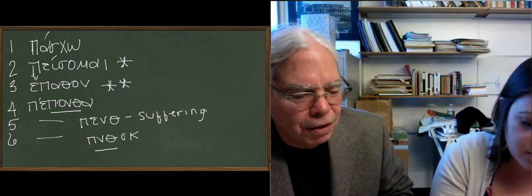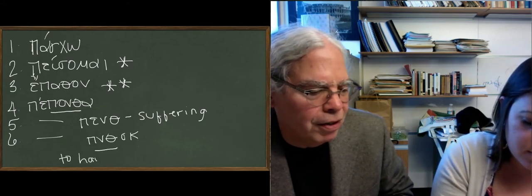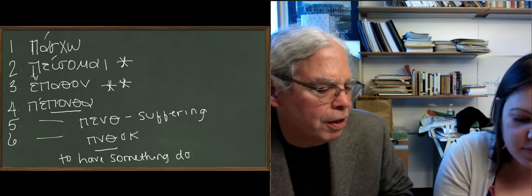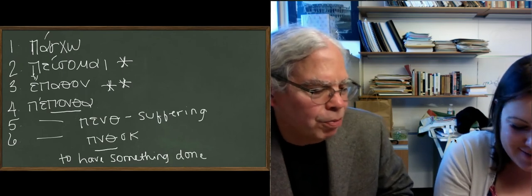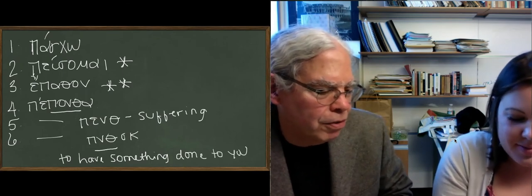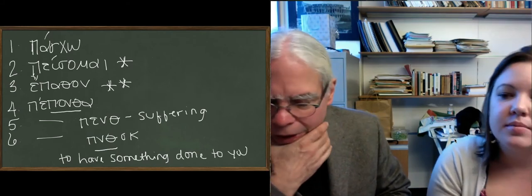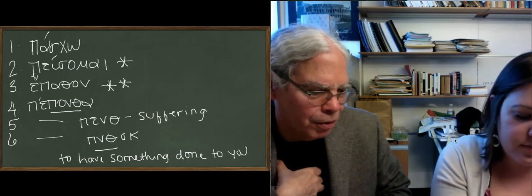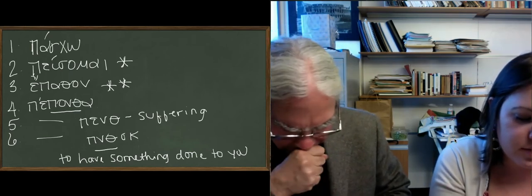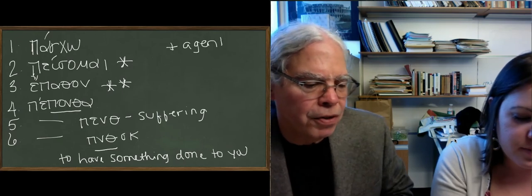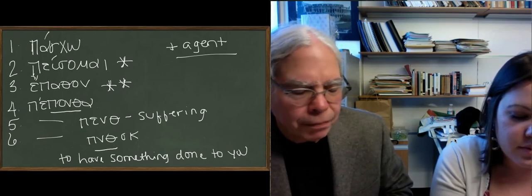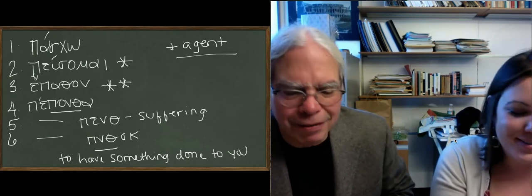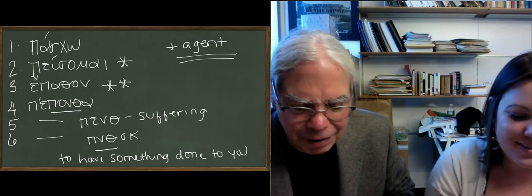So this is all the same root, although it looks very different, but here's what it means: it means to have something done to you. In other words, the basic notion of it is passiveness. So you can't have a separate passive form of a verb whose meaning is fundamentally passive. So that's why there's no perfect middle passive and there's no aorist passive. But it can take an agent, so you can say, I suffered at the hands of somebody. And then you're going to use hupo plus the genitive for the person at whose hands you suffered. Even though the form is active.